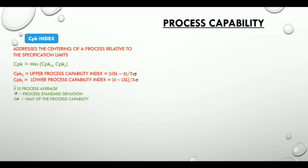Sigma is the process standard deviation, and 3 sigma is half of the process capability. In order to compute a CPK value, at least one of the specification limits must be stated.